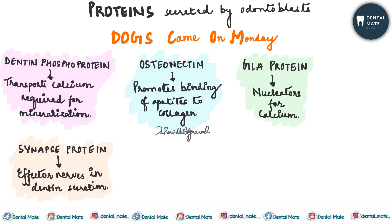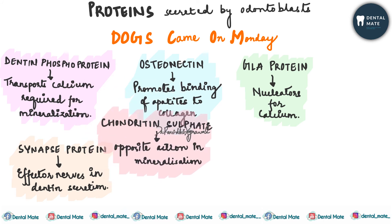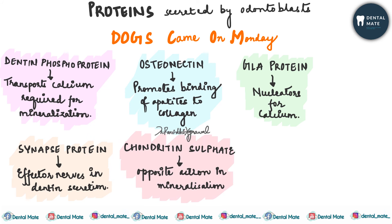Synapse proteins such as synapsin and synaptogamin are present in the dentinal tubules and act as effector nerves in dentine secretion. Chondroitin sulfate opposes mineralization: in predentine it prevents transportation of apatite crystals, whereas in mineralized dentine it gets adsorbed into collagen and promotes apatite binding, thus preventing excessive mineralization.